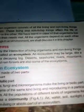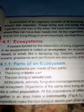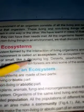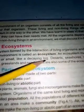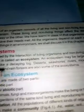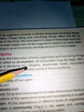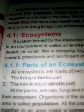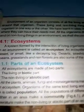The ecosystem may be as large as a desert or as small as a decaying log. Sea shores, rivers, mountains, oceans, grasslands, and rainforests are some examples of ecosystems.